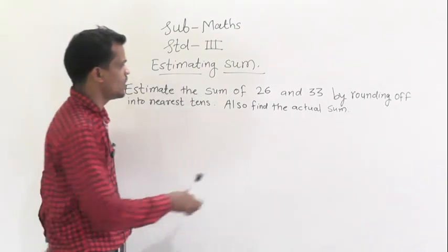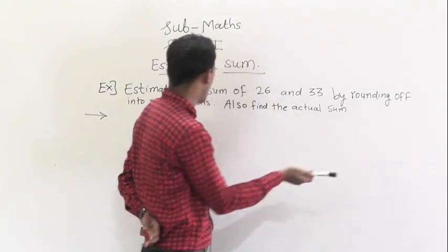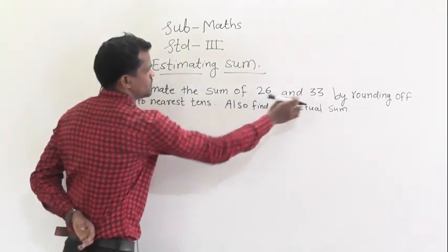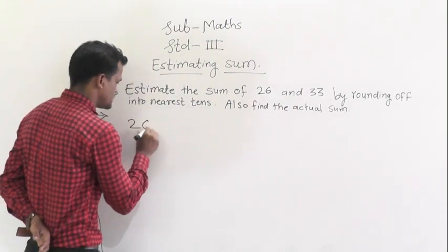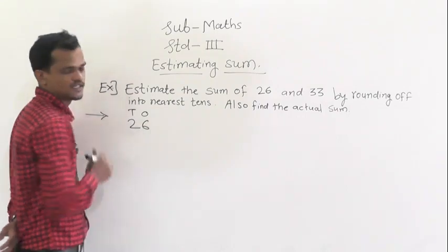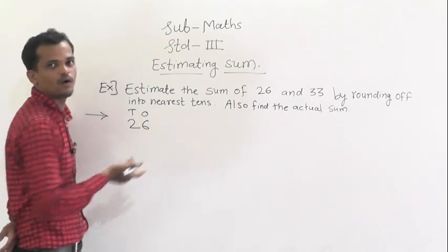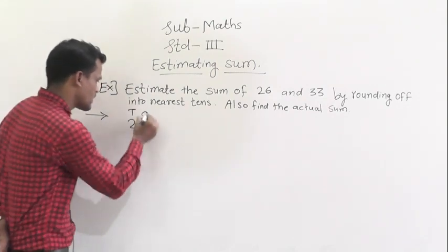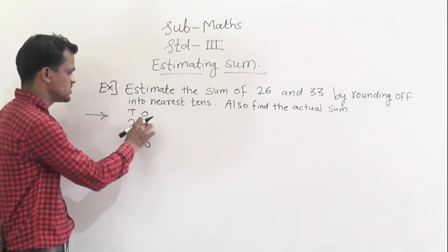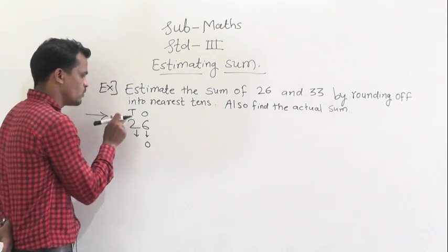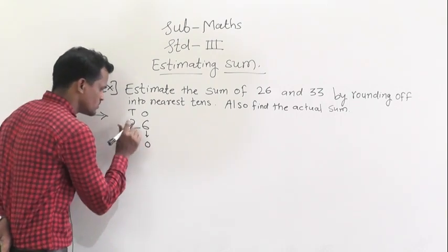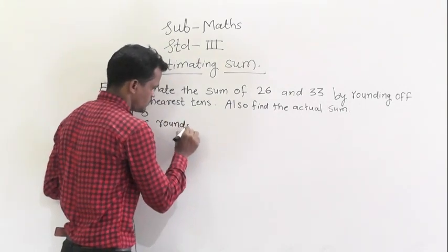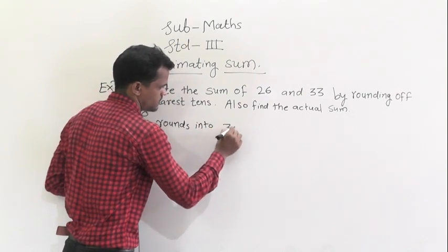Now let's solve an example: estimate the sum of 26 and 33 by rounding to the nearest tens, and also find the actual sum. First, round 26 — the one's place digit is 6, which is greater than 5, so we round up. Write 0 at the one's place and add 1 to the ten's digit: 2 becomes 3, so 26 rounds to 30.